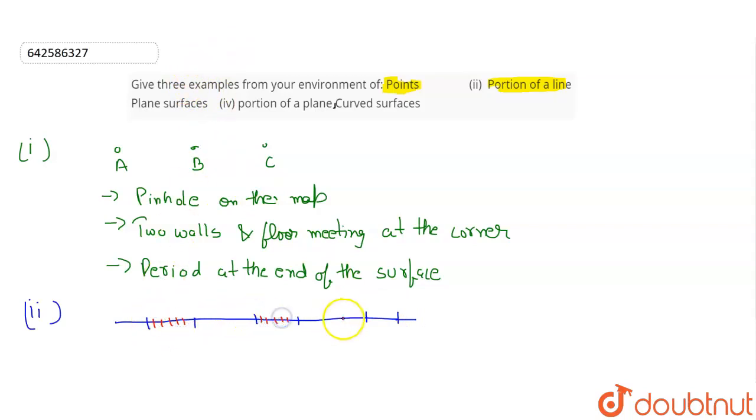Let them take as portions. This is AB, this is CD, and this is EF. These are the portions on a line. So now what we can do, we can give examples of any portions of the line. Let's take thin curtain rods. Thin curtain rods are the example of portion of the line.